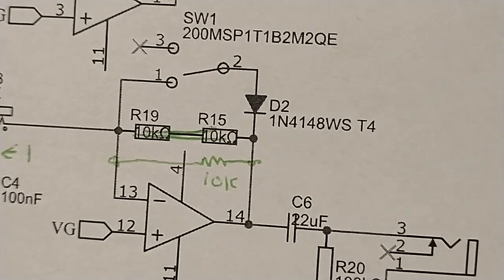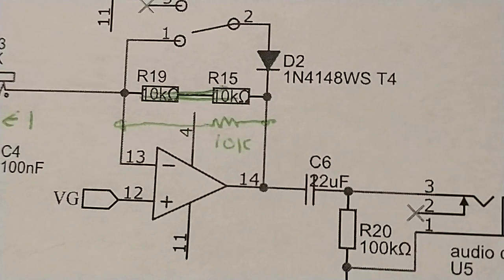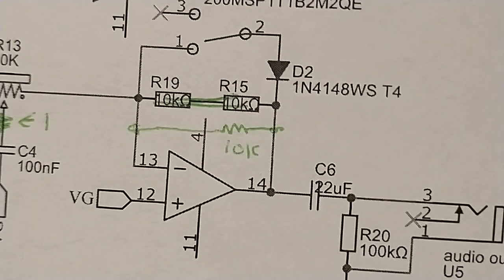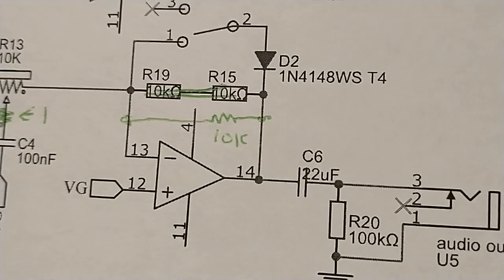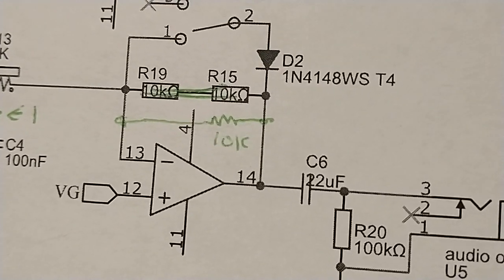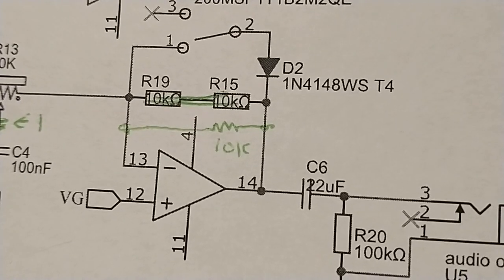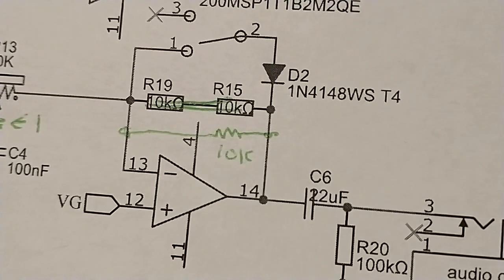This diode is in the feedback path of this final stage amp. It clips the output in a pretty hard way. There's only that one diode. It only clips the top or the bottom. I can't remember which.